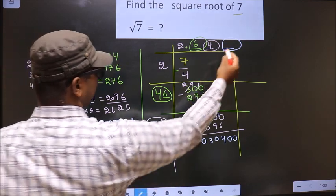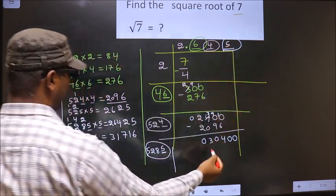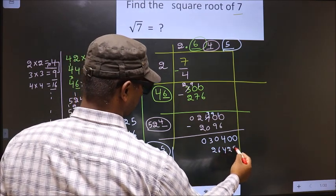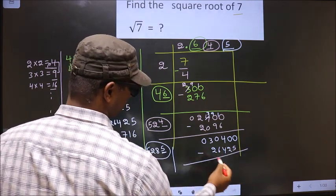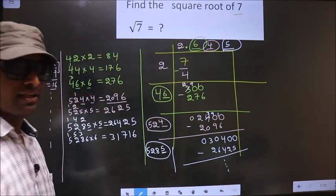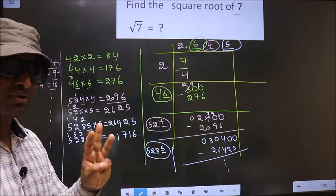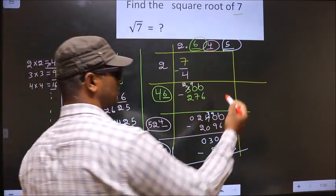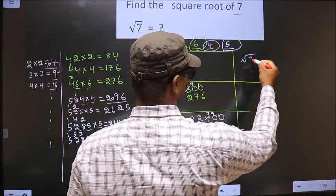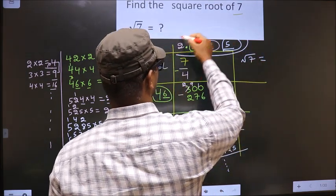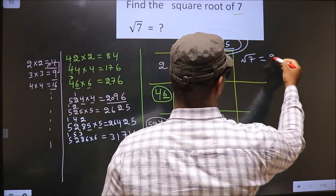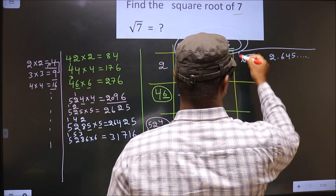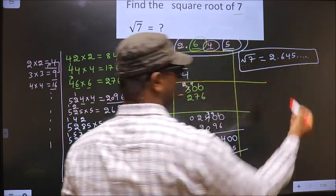So, 5 here, 5 here and here, giving 26425. Now you subtract and it goes on. It is enough if you do up to 3 decimal places. The square root of 7 is 2.645 and goes on. This is our answer.